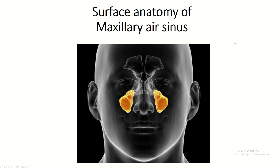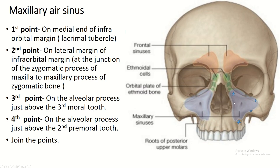Surface anatomy of the maxillary sinus. This is the infraorbital margin, and this is the medial end of the infraorbital margin. The first bony landmark is the lacrimal tubercle — it is the junction between the frontal process of the maxilla and the lacrimal bone. The second point is on the lateral end of the infraorbital margin.